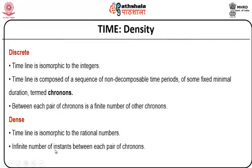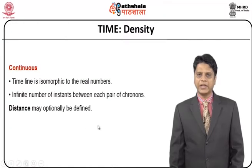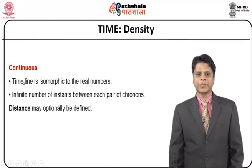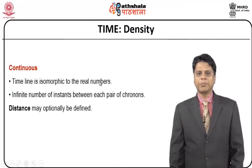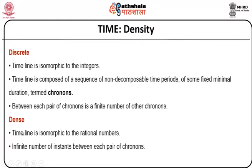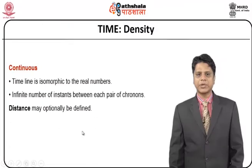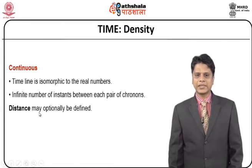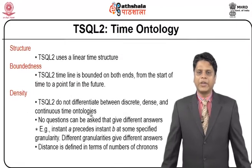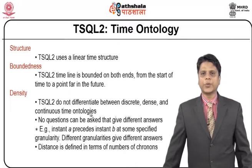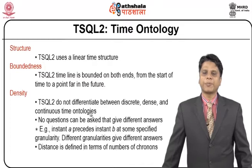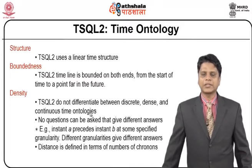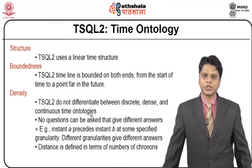Dense density will have an infinite number of instances between each pair of chronons. Finally, we have one more density value called continuous density, where the timeline is isomorphic to real numbers. Please distinguish between three time dimensionalities: discrete is bounded by integer values, dense is bounded by rational numbers, and continuous is bounded by real numbers. We term the SQL which supports temporal events as T-SQL — temporal SQL. The version T-SQL 2 supports time ontology, where the parameters considered — structure, boundedness, and density — are clearly defined.